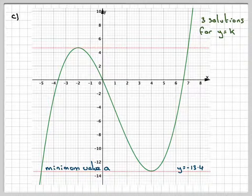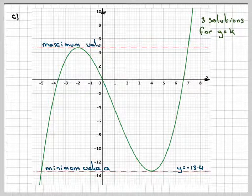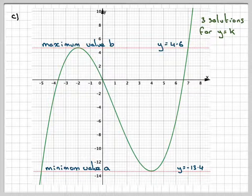And then this one at the top here, that's going to be 4.4. So it's going to be 4.6. Okay, so any value between minus 13.4 and 4.6 will give three solutions for y is equal to k, if you draw it along.